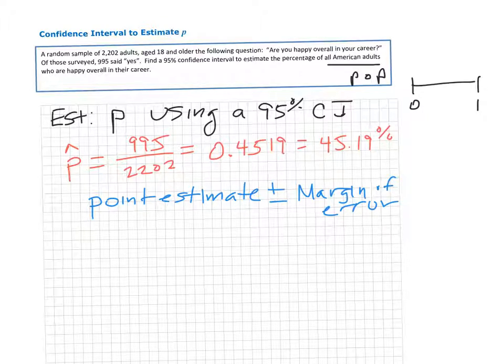Our point estimate in this case, based on our sample, is our sample proportion - this number right here, 45%. So on the number line, I could mark that.